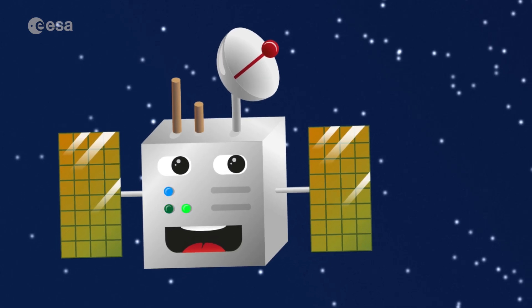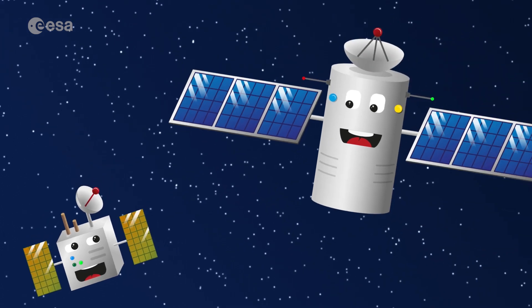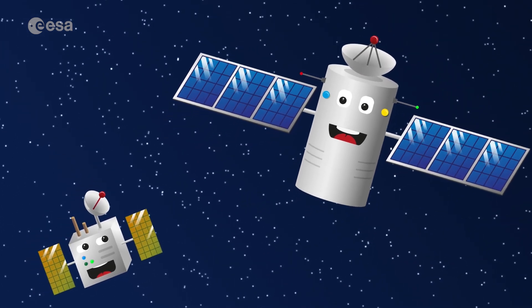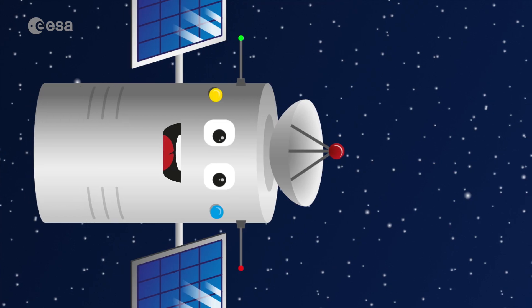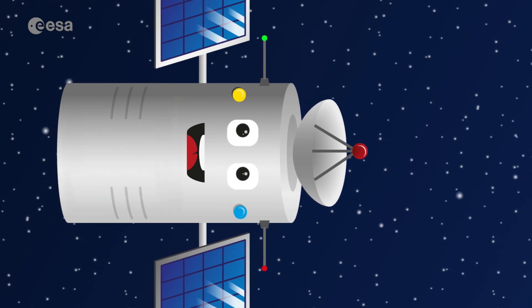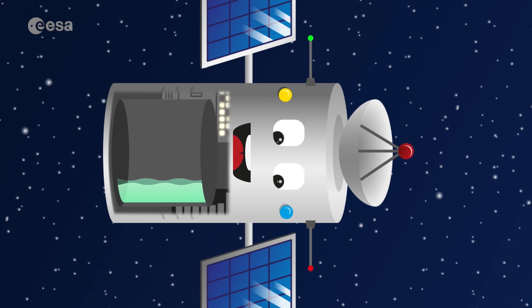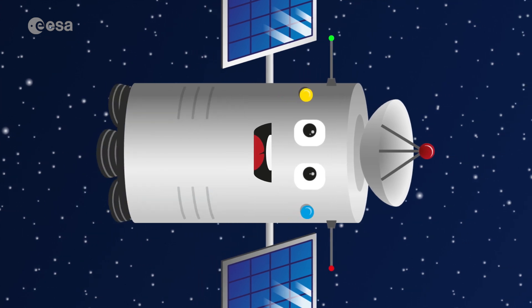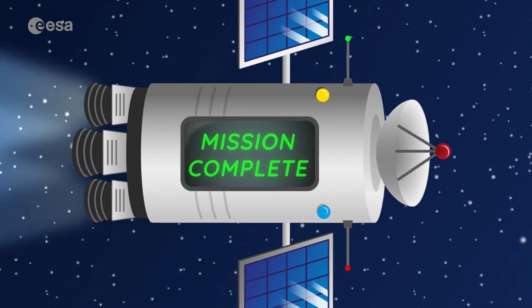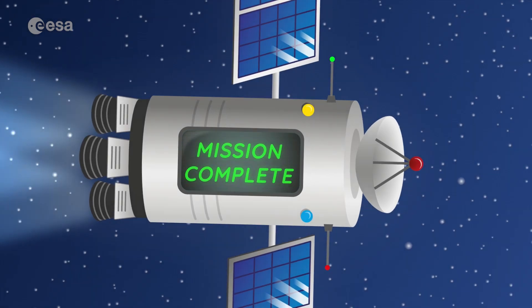But this only works for small satellites. What do we do with the bigger ones? Larger satellites need more help. They could carry extra fuel in their tanks, enough to send them back to Earth, or even have extra motors that switch on at the end of their mission that push them toward the ocean.